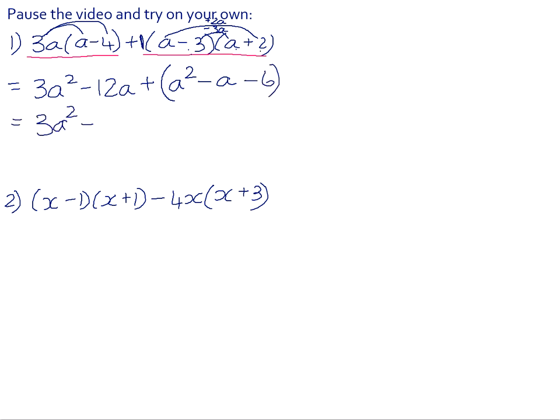As I said earlier, that this bracket wasn't 100% necessary because when we distribute a positive 1 into the bracket, the bracket stays the same. But it's a good habit to get into in case it's not positive 1 that we're distributing. We can now add our like terms together. So we've got a squareds and we've got a's. 3a squared plus a squared is 4a squared. Negative 12a subtract a is negative 13a and then our minus 6.